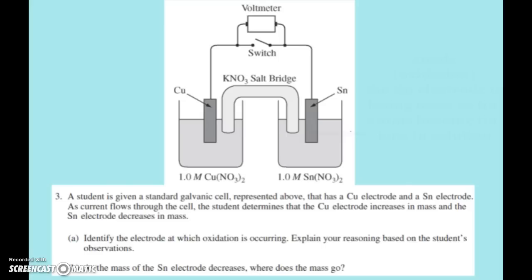So the first two parts here, A and B. Identify the electrode at which oxidation is occurring. Okay, and when we see oxidation as far as our electrocells are concerned, we know that this is the anode.